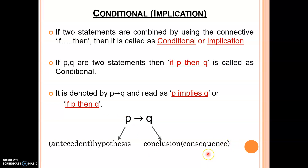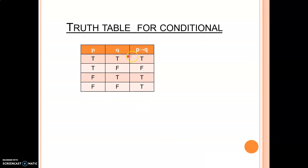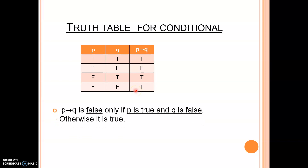Truth table for conditional — this is very important, you have to learn it by heart. P and Q are two simple statements and the conditional statement is P implies Q. In the first row, truth value of P is true and Q is true, so true implies true is true. True implies false is false. False implies true is true. False implies false is true. P implies Q is false only if P is true and Q is false — that is only in the second row. In all remaining cases you get true.